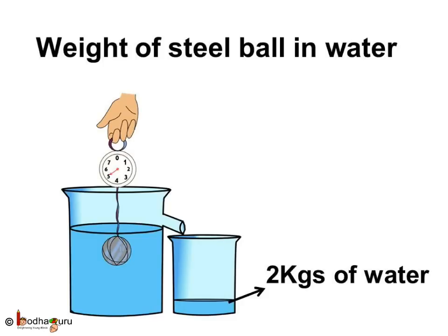In this example, which is more — the actual weight or the apparent weight? The actual weight, that is 7 kg, is more. The apparent weight is known as the apparent loss of weight. So we can say the weight of water displaced by the steel ball is equal to the apparent loss of weight, that is 7 minus 5 equals 2 kg is the weight of the water displaced. Because the actual weight is 7 kg and the weight of water displaced is only 2 kg, the steel ball sinks.